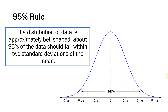One handy thing we can do with standard deviation is use it to get a feel for where the data is in our distribution. One way we do that is using the 95% rule. The 95% rule says that if we have bell-shaped symmetric distributed data, then about 95% of the data is going to be within two standard deviations of the mean.